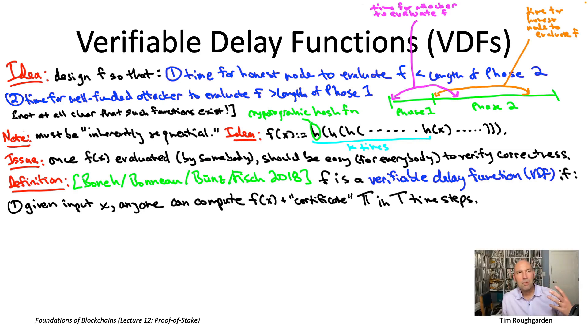If you're thinking about the example of kind of an iterated cryptographic hash function like SHA-256 in mind, then obviously capital T is going to be scaling with the number of times you ask the hash function to be evaluated.